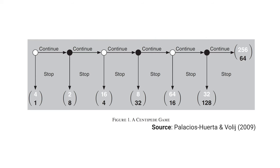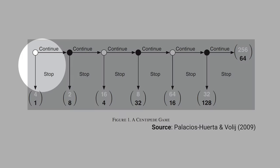This is a diagram of how the centipede game works. The game starts with a white player who has two choices: continue or stop. If he stops, he gets $4 and the black player gets $1.